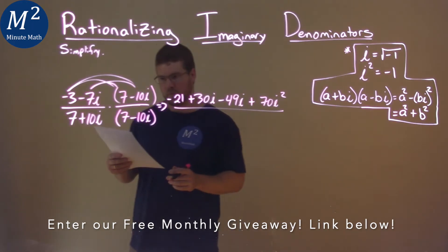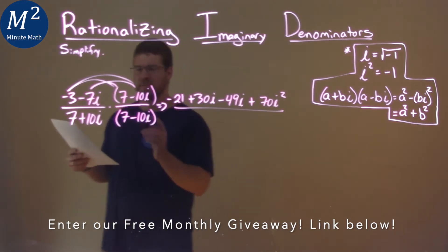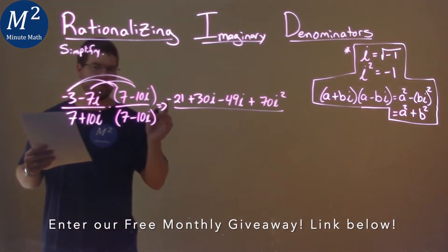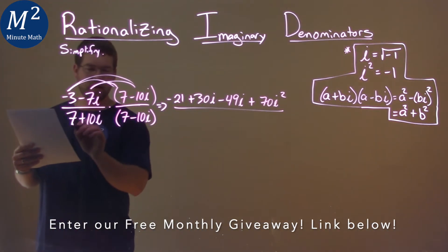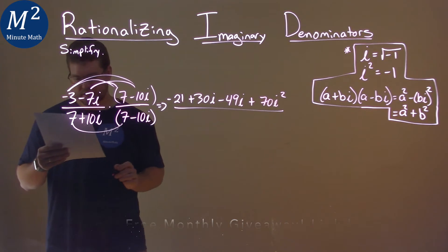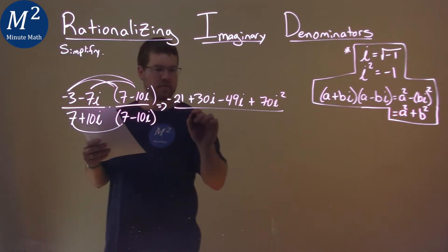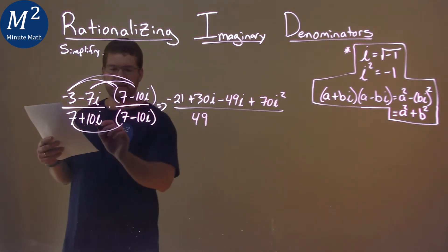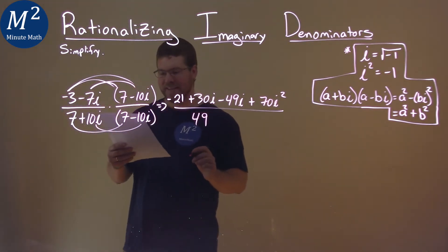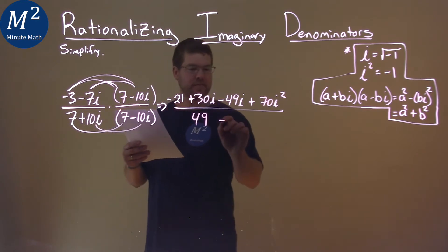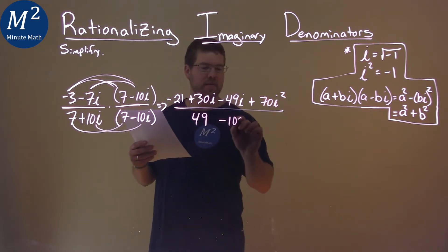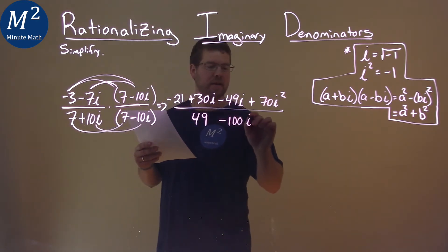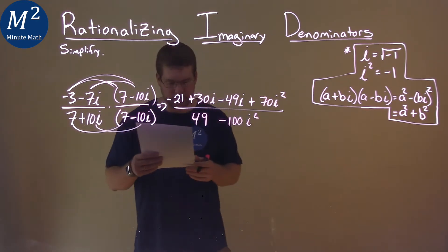All over here. Now, here's the beauty of the complex conjugate: just multiply 7 times 7, which is 49. And 10i times negative 10i is negative 100i squared.